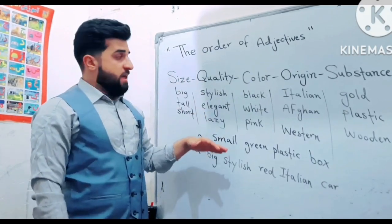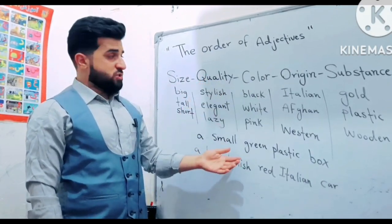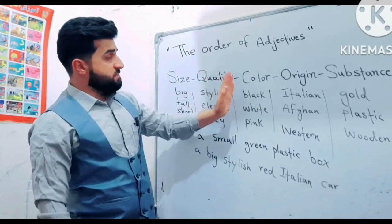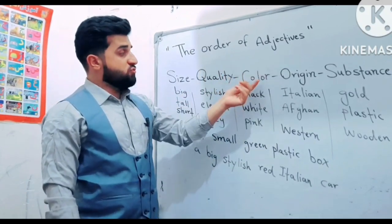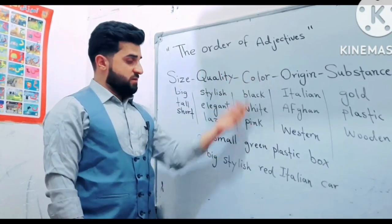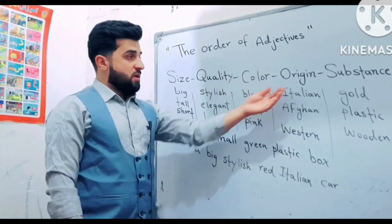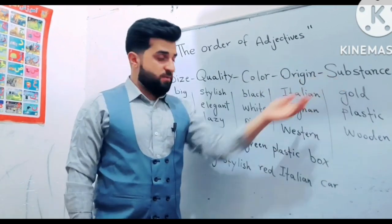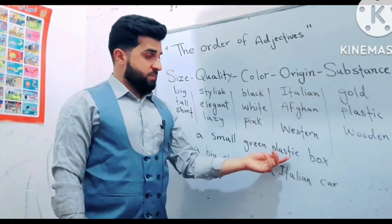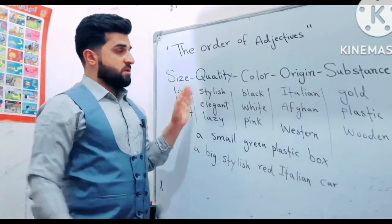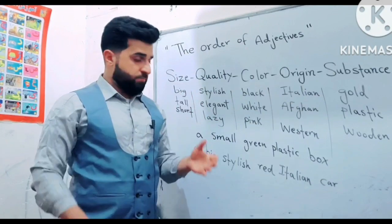If we count it — if origin is not present, then substance comes at the end. This is the order we cannot change: Size, Quality, Color, Origin, Substance.